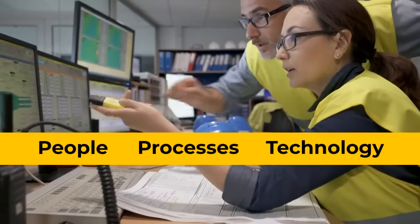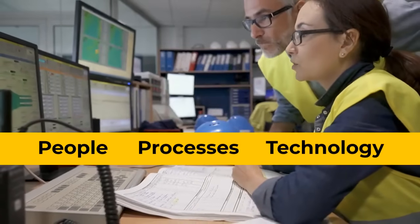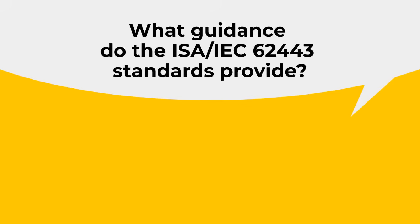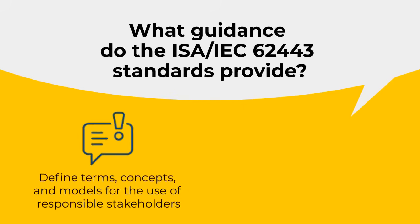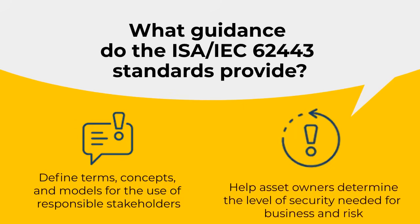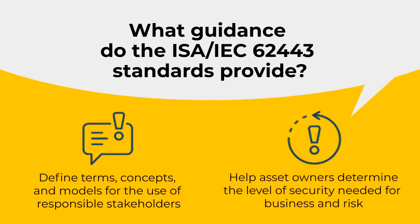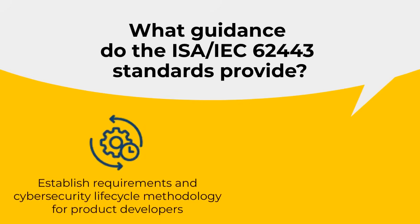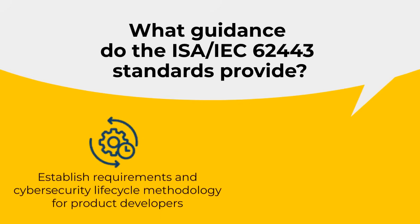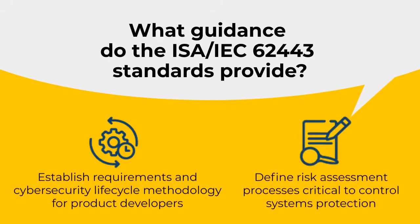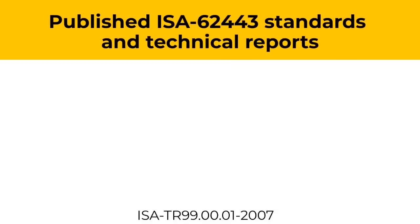The 62443 series addresses the security of industrial automation and control systems throughout their life cycle. The 62443 standards define common terms, concepts, and models that can be used by all stakeholders responsible for control systems cybersecurity. They help asset owners determine the level of security required to meet their unique business and risk needs, establish a common set of requirements and a cybersecurity lifecycle methodology for product developers, including a mechanism to certify products and vendor development processes, and define the risk assessment processes that are critical to protecting control systems.